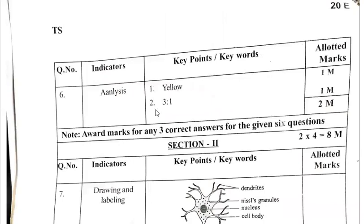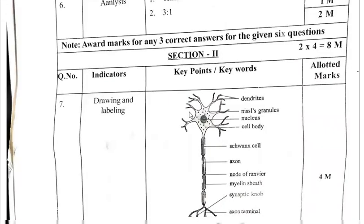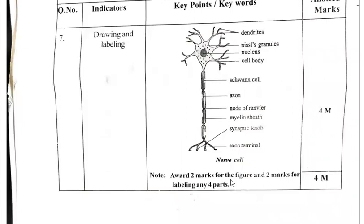For analysis: first answer is yellow, second is 3:1. Award two marks for the figure — for drawing you get two marks, and two marks for labeling any four parts. No need to label all parts. If you label any four parts, you will get full marks for this diagram.